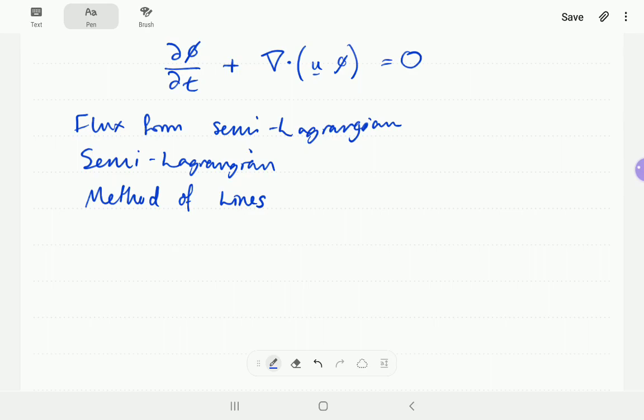The flux form semi-Lagrangian schemes are a type of finite volume scheme, so you will imagine that you have grid boxes, which might be squares or cubes or other shapes, and you've got a mass of phi inside each grid box. And the rate of change of phi inside the grid box is determined by the fluxes that go in and out of that grid box.